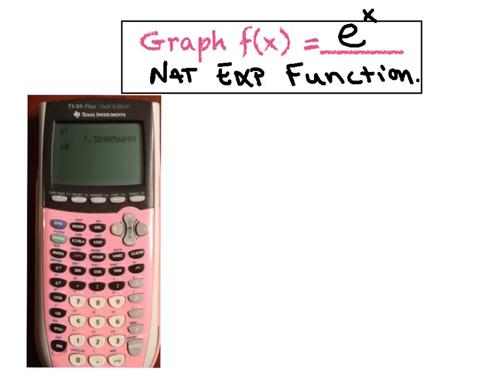First we want to talk about where on our calculator is a special button for E. You'll notice this button that says LN on it, and right above that is a very faint e to the x. That's the one I like to use. We can hit the second button and then hit the LN button. What's going to pop up on your screen is e to the power, and the calculator automatically has the exponent built into it.